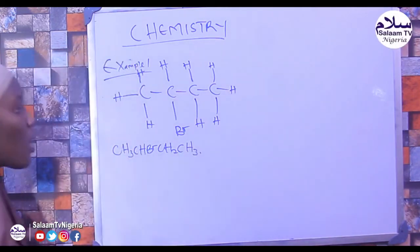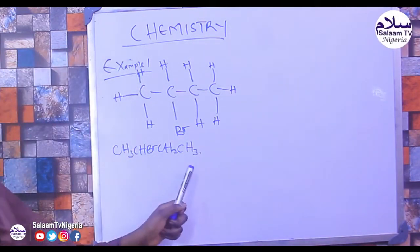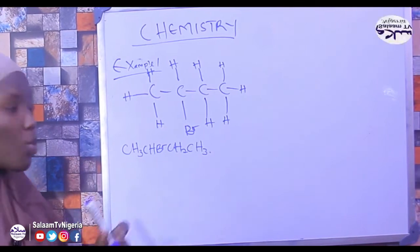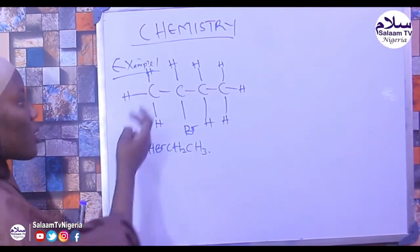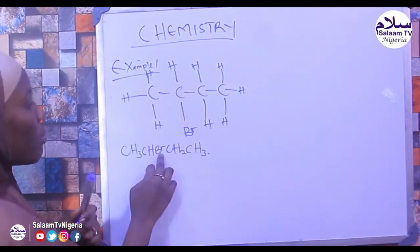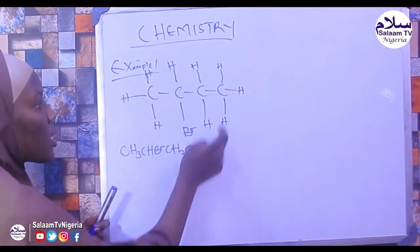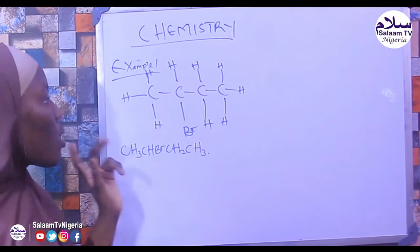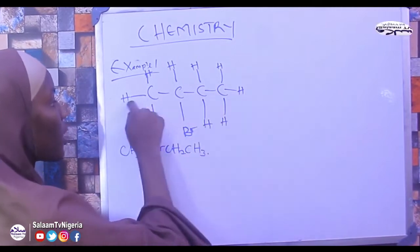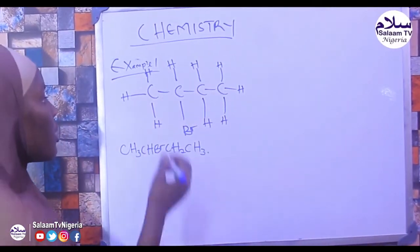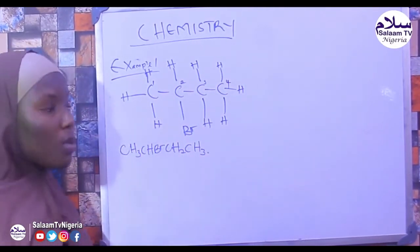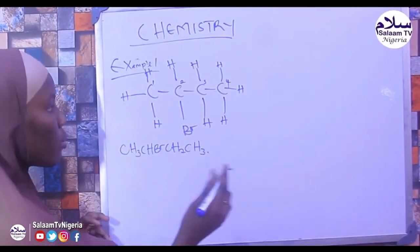The formula is CH3CHBrCH2CH3. To name this compound, we select the longest carbon chain. The longest carbon chain has 4 carbons, so the number is 4, giving us the parent name butane.